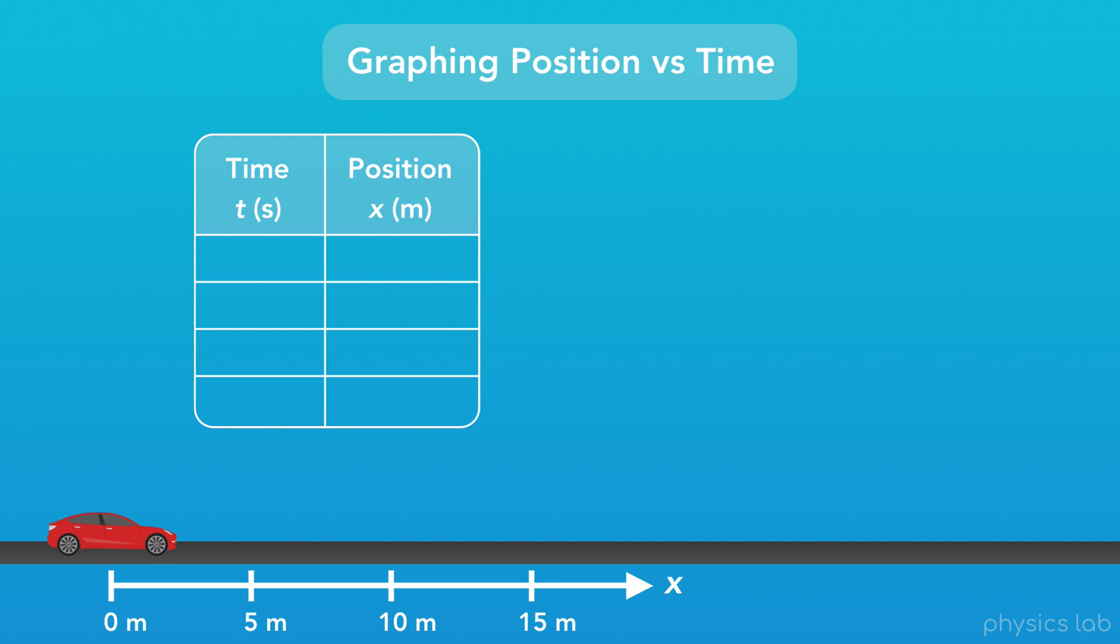So let's say the car is driving forward like this. At the very beginning, the position of the car is 0 meters, and after 1 second, the car's position is 5 meters, after 2 seconds, the car's position is 10 meters, and after 3 seconds, the position is 15 meters.